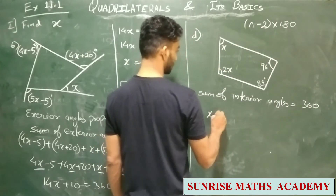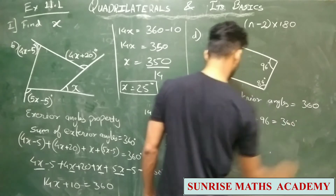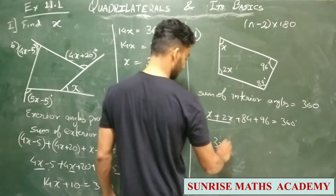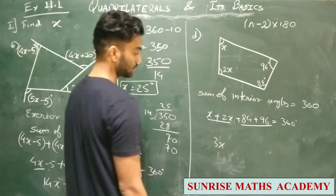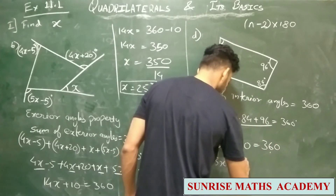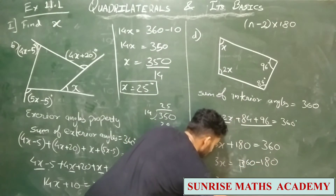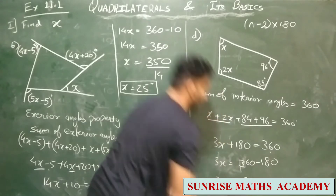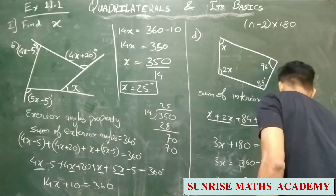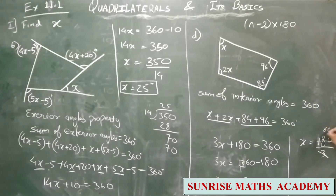Sum of interior angles is 360. So: X + X + 2X + 84 + 96 = 360. X + X + 2X = 4X, and 84 + 96 = 180. So 4X + 180 = 360, giving 4X = 180, so X = 180 ÷ 4... wait — X = 360 ÷ 3 = 120. So X equals 120.